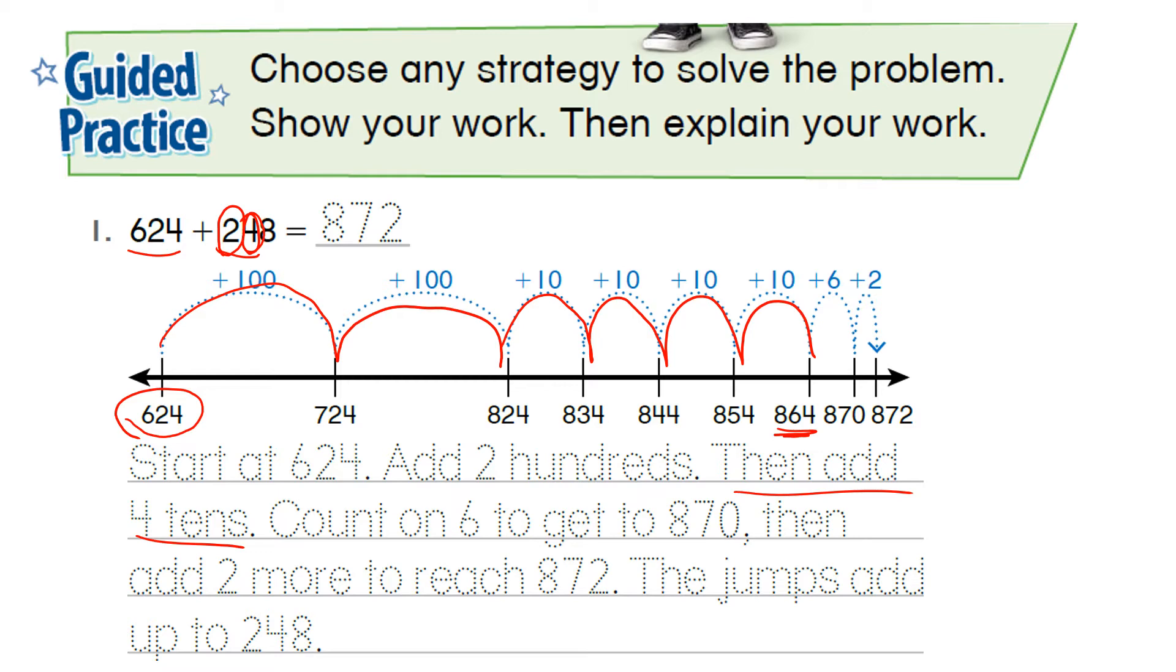Now it says count on 6 to get to 870. So we counted on 6 to get to 870 because 864 plus 6 is 870. We're just making it easier to solve. And then we're going to add the extra 2.